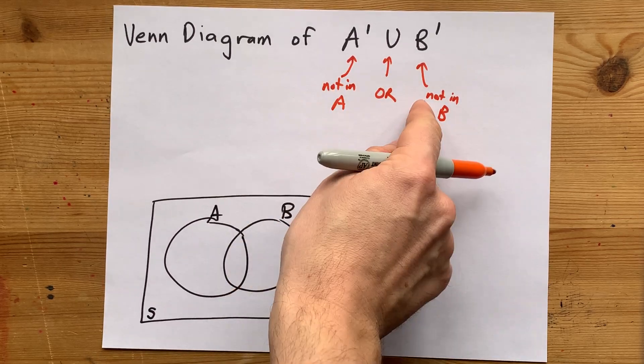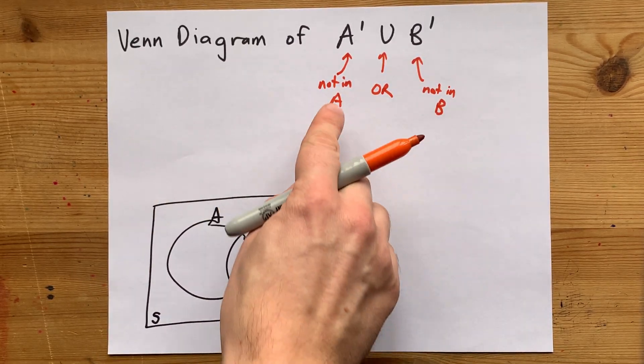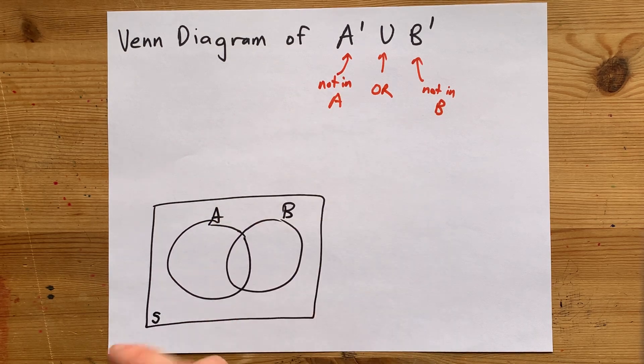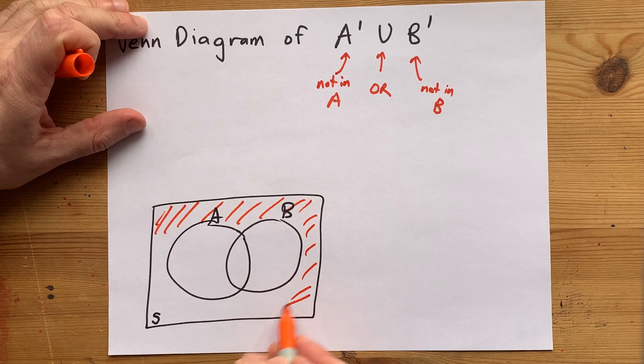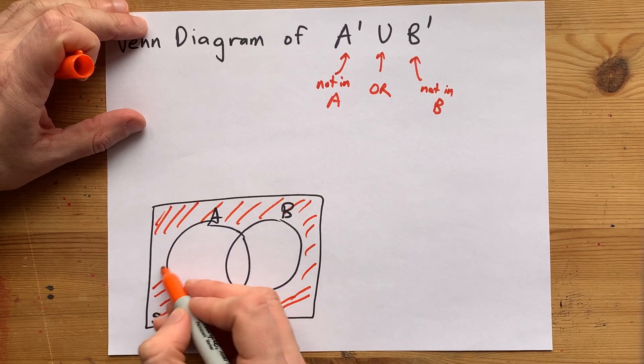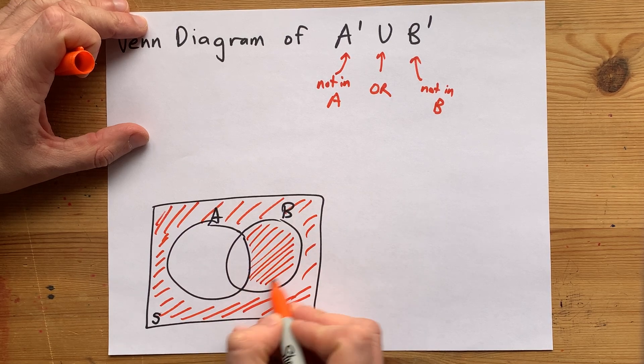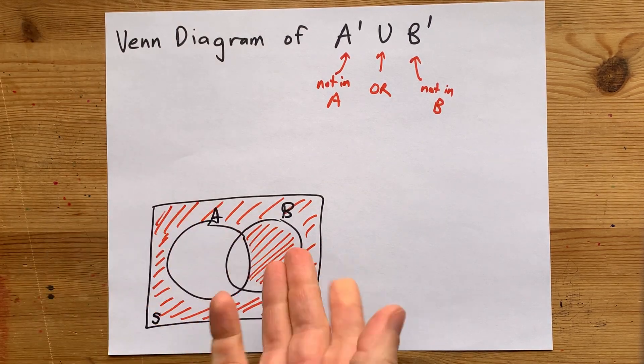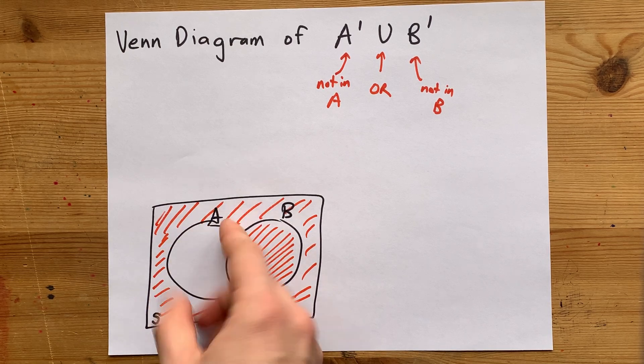So I can do each of these individually and then just be sure not to double shade anything. I get to shade anything that's not inside of A. So this section here on the very outside is definitely not inside of A. And this section here is also not inside of A because it's inside of B. I didn't shade this because it is in the A circle.